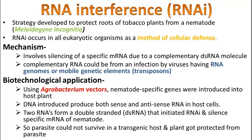The introduced DNA gene is transcribed in the host plant, producing both sense and antisense RNA. We can see that one strand is the sense RNA, which codes for the protein. The antisense RNA is the complementary strand. Together, these two different forms of RNA are produced from the same DNA.